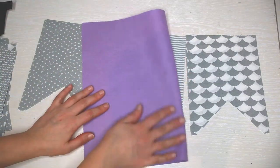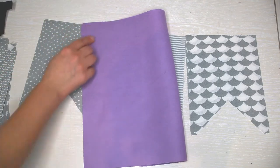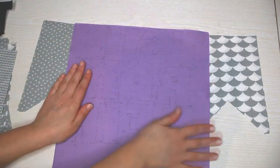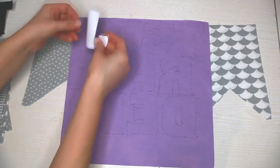Take your felt and trace the letters on it using a pencil. I prefer tracing them mirrored as this way you won't see any markings on the letters when you sew them.